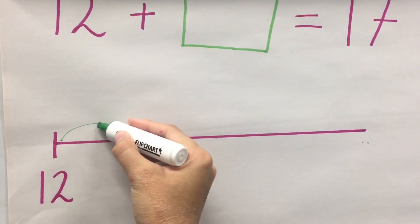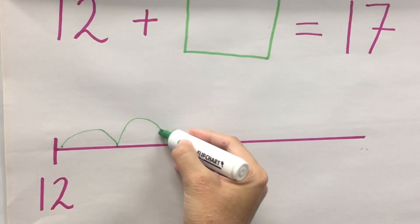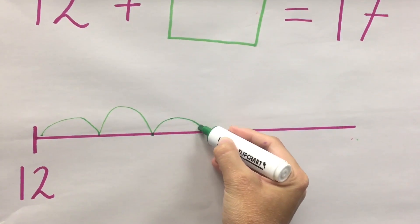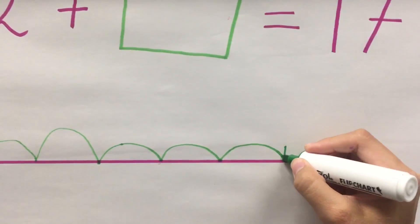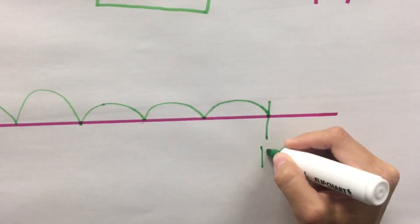It'd be 13, 14, 15, 16, 17. Once you've got to 17, you're going to stop there and you're going to put 17 underneath it.